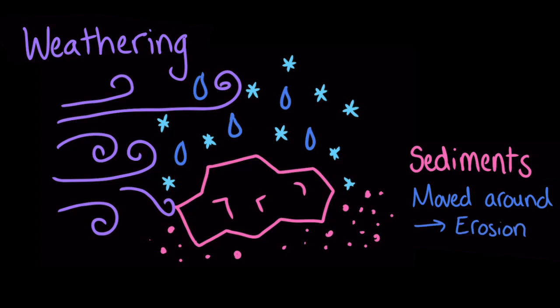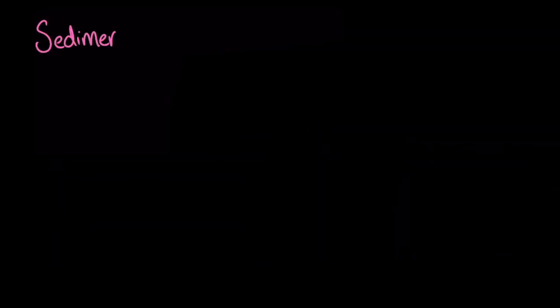Eventually, the sediment will settle down somewhere, maybe at the bottom of an ocean or a lake, and it might join other sediment from other rocks, crushed up shells, and plant matter. And over time, this sediment will become a rock. Rocks that are formed from sediments are called, you guessed it, sedimentary rocks.